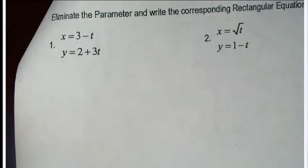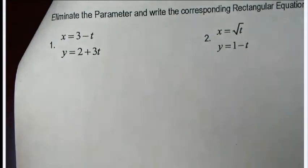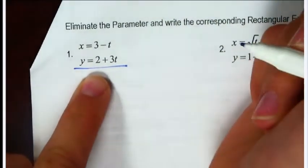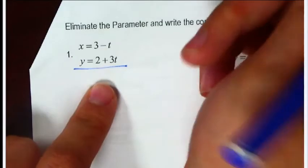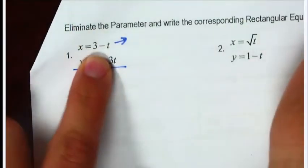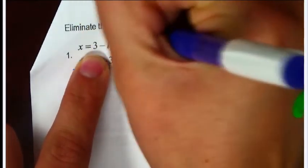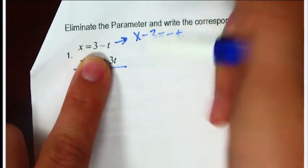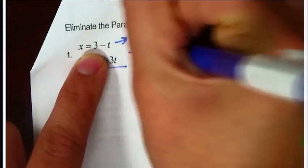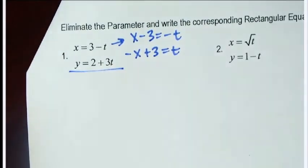Now we're going to go the other way — rewrite two parametric equations as one rectangular equation. For number one, we have x equals and y equals, both with t. The y equation will be our final answer, but we need to replace t. Take the x equation and solve for t: subtract 3, then multiply by negative 1, giving t equals negative x plus 3.